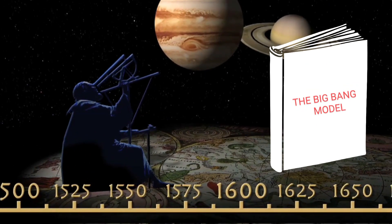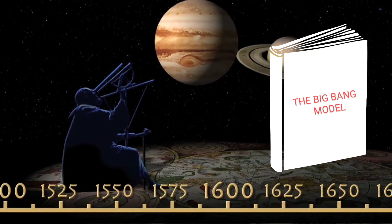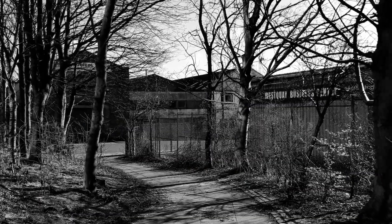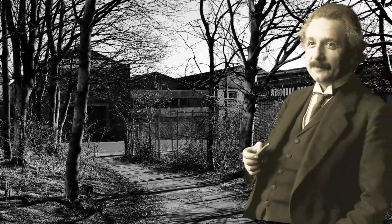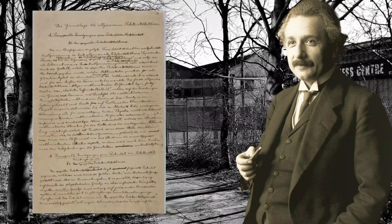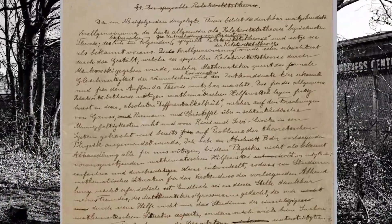The Big Bang theory developed from observations of the structure of the universe and theoretical considerations. Just over a century ago, Albert Einstein published his theory on general relativity. It made a whole bunch of predictions which later could be tested.